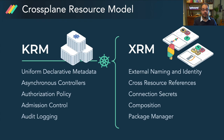The XRM captures the lessons learned within the community in managing external resources. It deals with mixed external naming, identity, and adoption of existing resources. It includes cross-resource references, handling connection secrets and credentials. Composition is the popular feature that enables platform teams to define new self-service APIs for their application teams. And finally, a package manager designed for Crossplane scenarios.